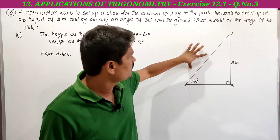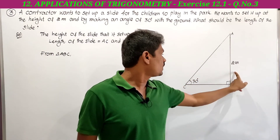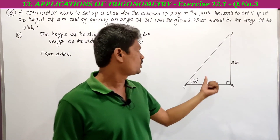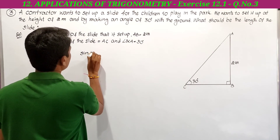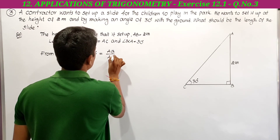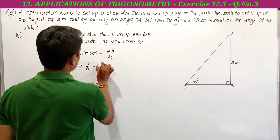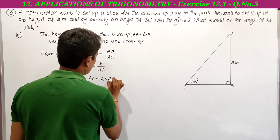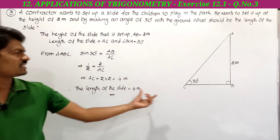We need to find AC. In triangle ABC, AC is the hypotenuse. AB equals 2 meters is the opposite side to angle 30 degrees, and AC is the hypotenuse. The trigonometric ratio relating opposite side and hypotenuse is sin. So sin 30 equals opposite side by hypotenuse, which is AB by AC. Sin 30 value is 1 by 2. So 1 by 2 equals 2 divided by AC. By cross multiplication, AC equals 2 times 2 equals 4 meters. Therefore the length of the slide is equal to 4 meters.